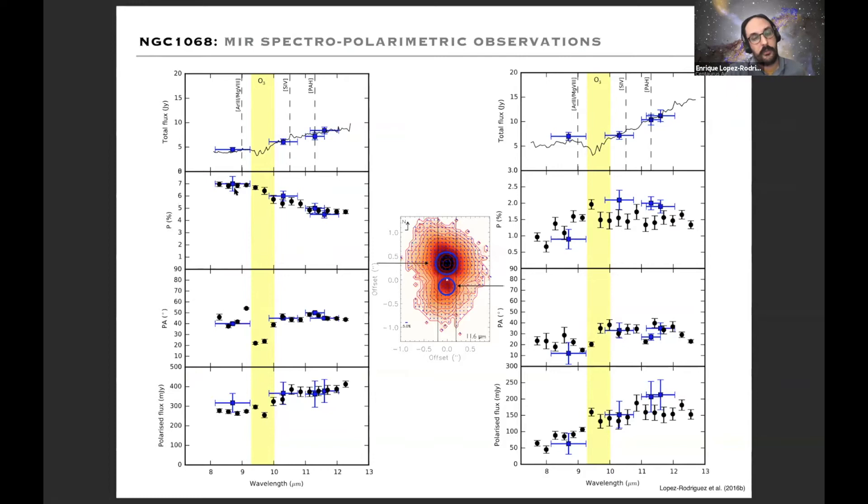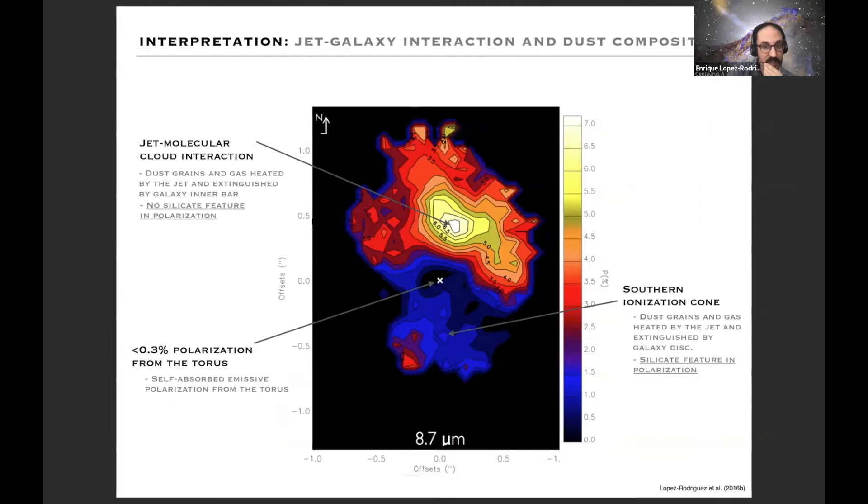After this, our interpretation is the following: we have three different areas. The north area is the jet-molecular cloud interaction, so basically the dust grains are heated by the shock of the jet with the giant molecular cloud, and then we don't have any silicate feature. When you compare with the south, you have dust grains and gas heated by the jet and then it's extinguished by the host galaxy, and typically a silicate feature of polarization.